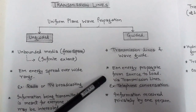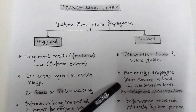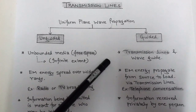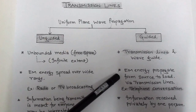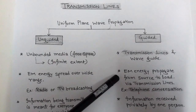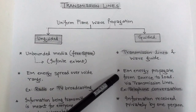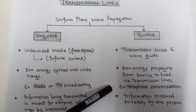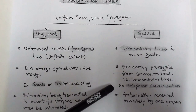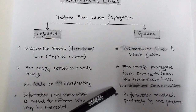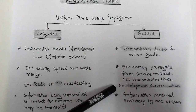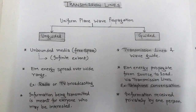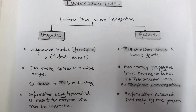In the case of guided propagation, the electromagnetic wave — that is, a Uniform Plane Wave — propagates via transmission lines. Here, electromagnetic energy travels from a source to a load, and the information in the form of energy is received by a particular person. For example, in the case of a telephone conversation. This is the difference between unguided and guided propagation.